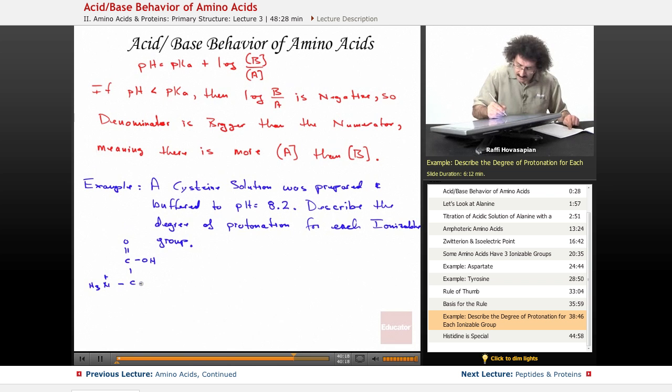Cysteine: NH3 plus, this is an H, this is a CH2, and cysteine has a SH. So again, begin by protonating all of them. In other words, that's protonated, that's protonated, that's protonated.